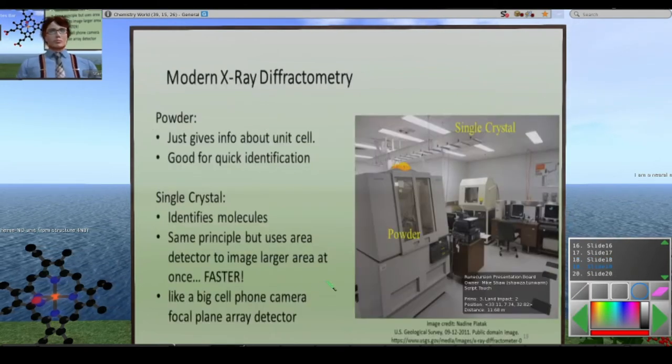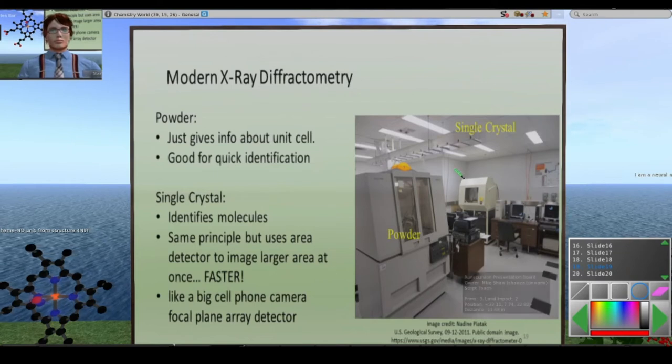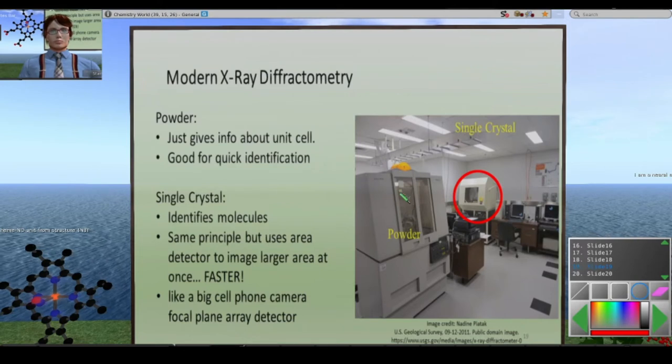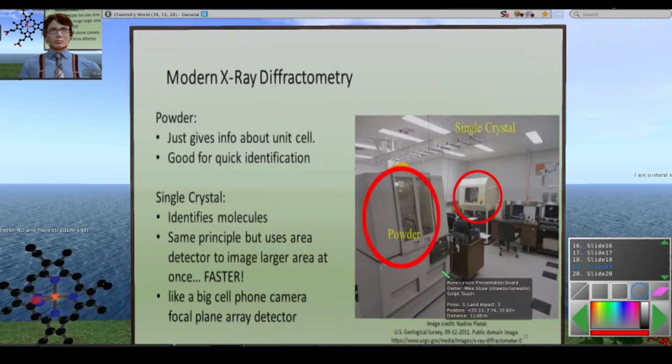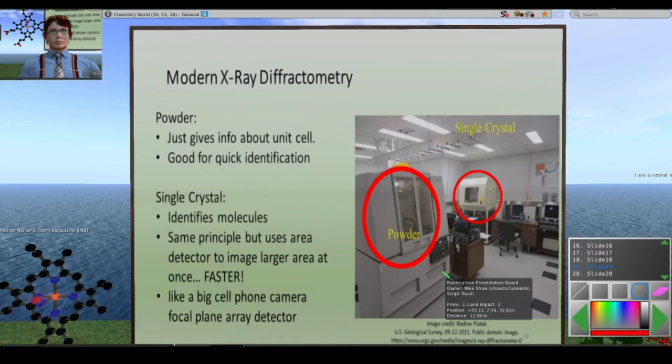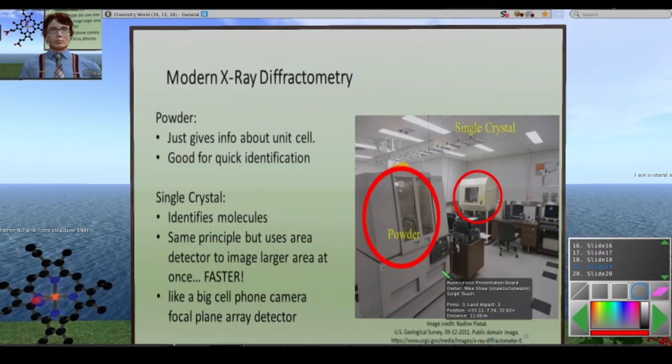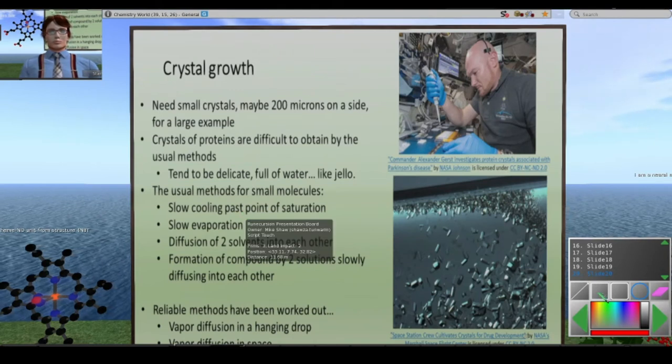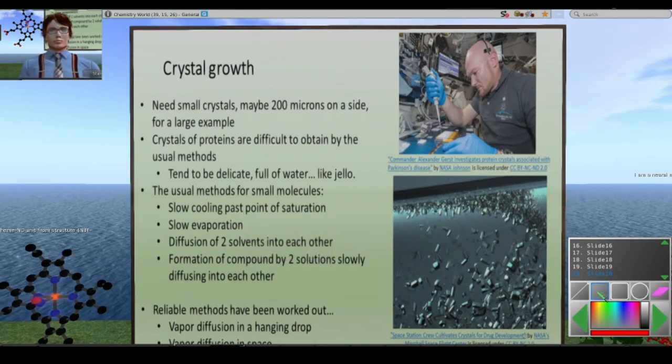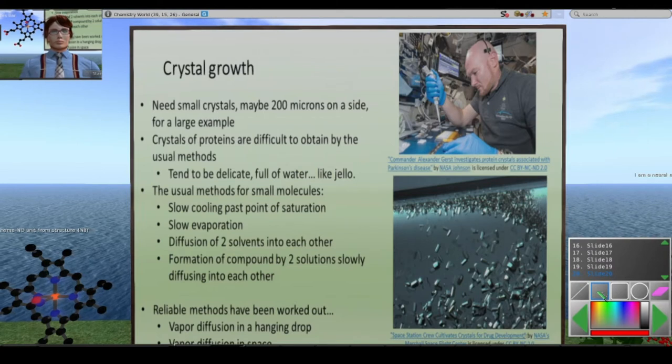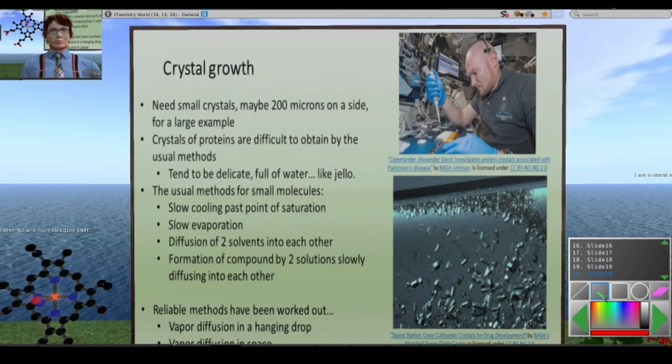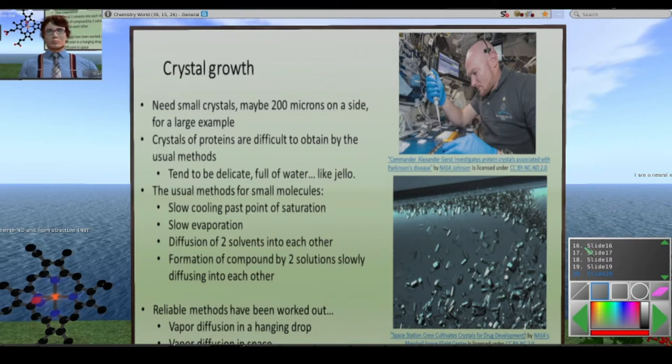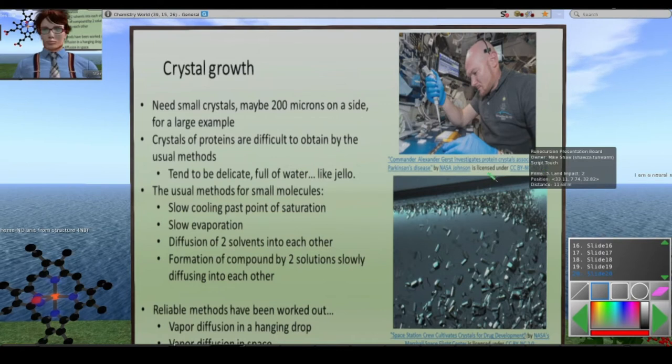Modern x-ray diffractometry. Essentially here's a single crystal x-ray diffractometer. There's a powder x-ray diffractometer. That's just what the instrumentation looks like.